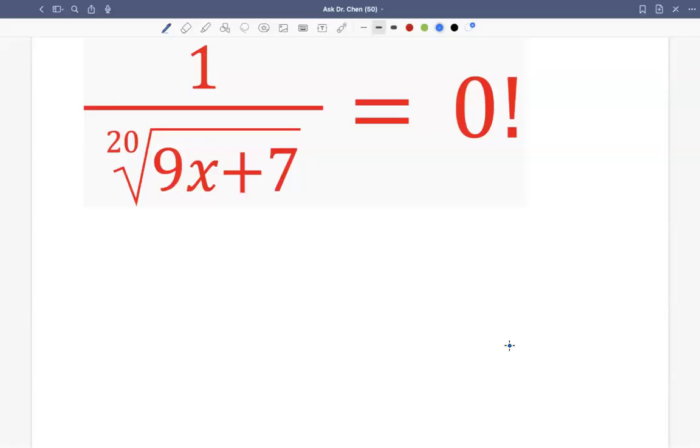Let's see this question. The variable x appears inside the 20th root and also in the denominator. And the key point for this question is to know 0 factorial equals to 1.